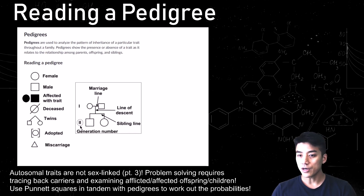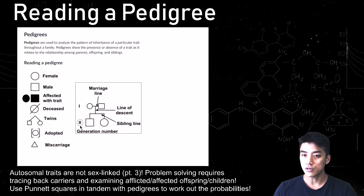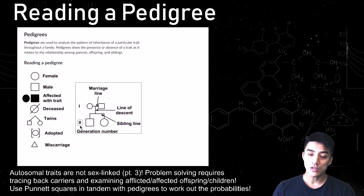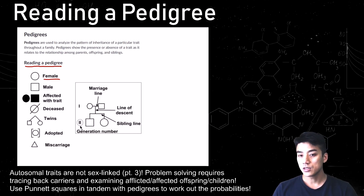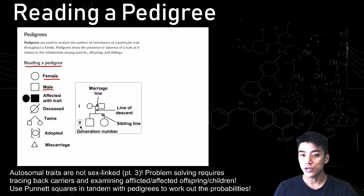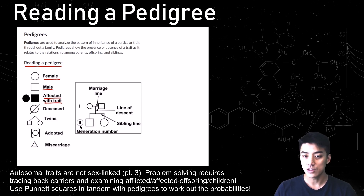Pedigrees can show you how certain traits are passed on from generation to generation. They show the presence or absence of a trait and you can figure out genotypes this way. When you read a pedigree there are a few things to keep in mind. Here's a key or legend: if you're a circle you're a female, if you're a square you're a male. If you're shaded in or darkened, that means you're affected with the trait, or you have the disease or disorder.